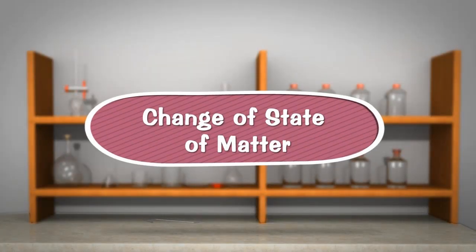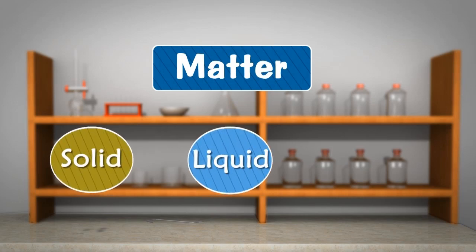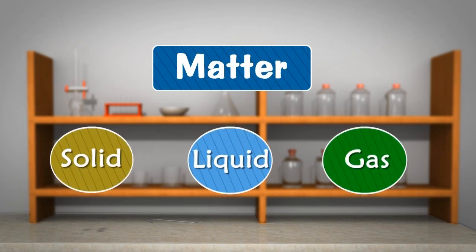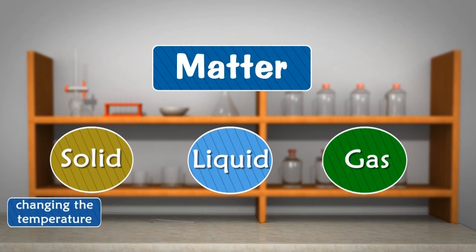Change of state of matter. Matter can exist in three physical states: solid, liquid and gaseous states. For example, water exists as a solid in the form of ice, as a liquid in the form of water, and as a gas in the form of steam or water vapor. We can change the physical state of matter in two ways: by changing the temperature and by changing the pressure.